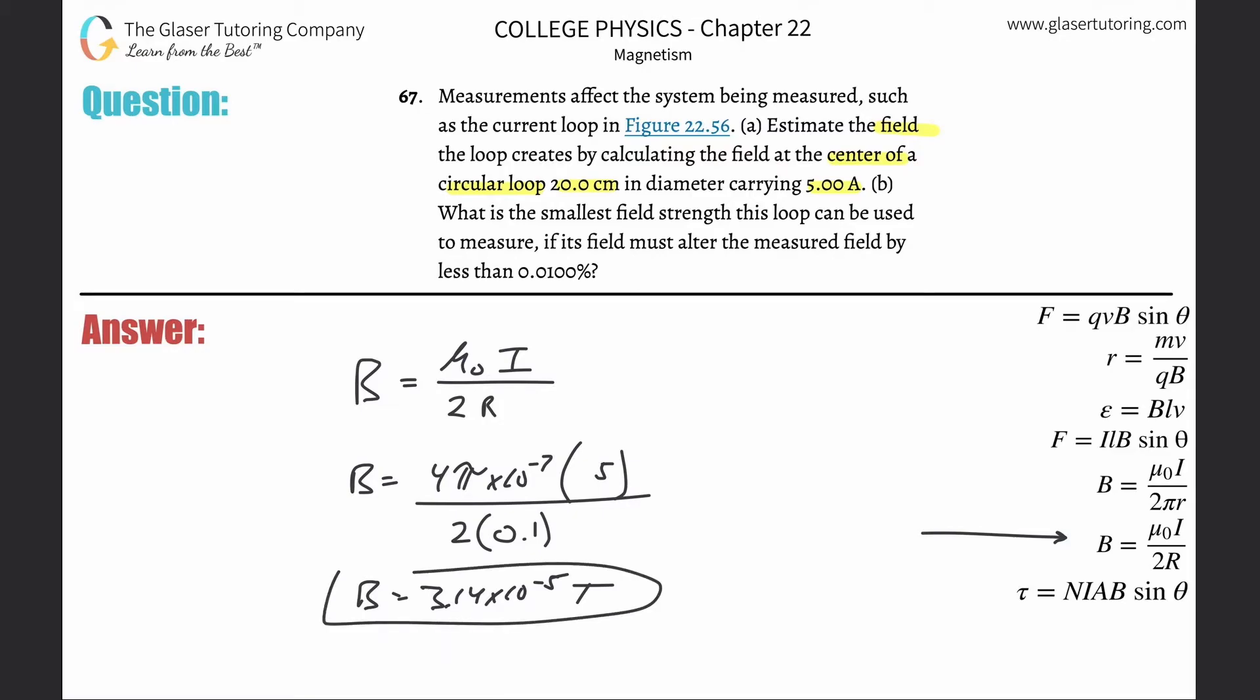Then it wants to know what is the smallest field strength this loop can be used to measure if its field must be altered.